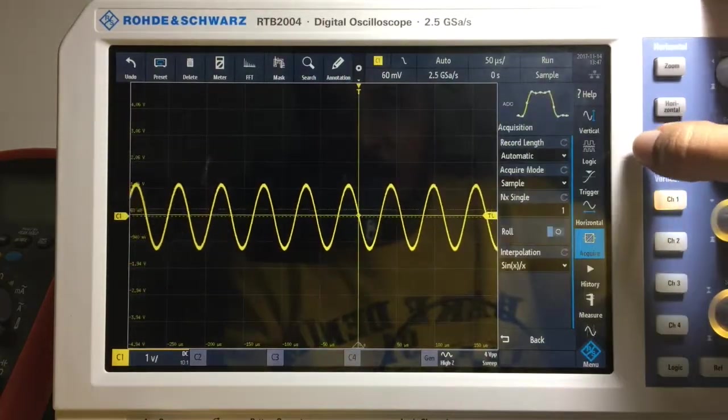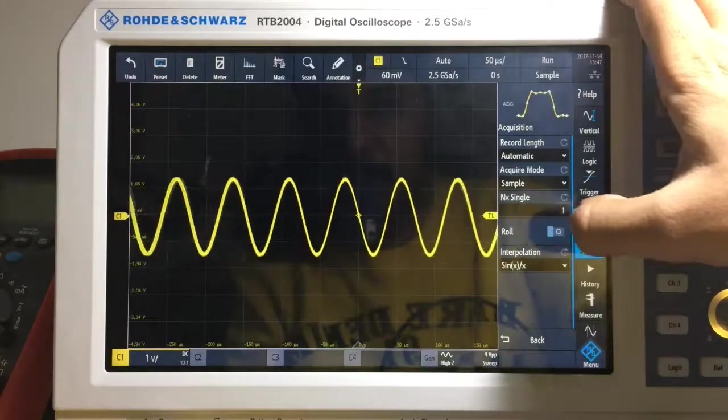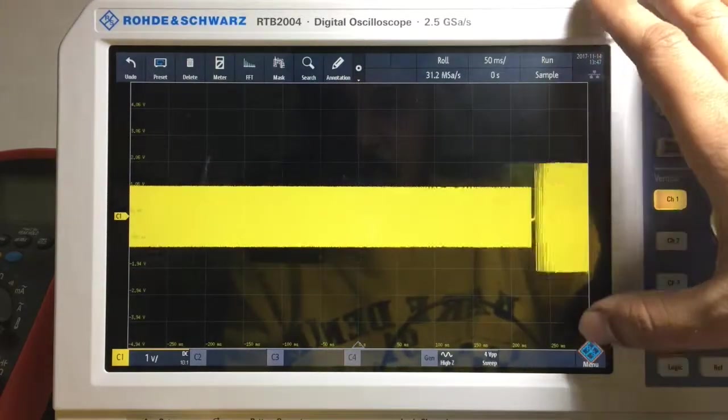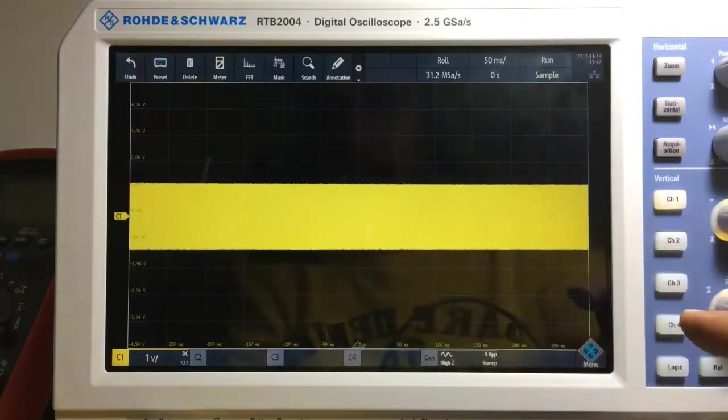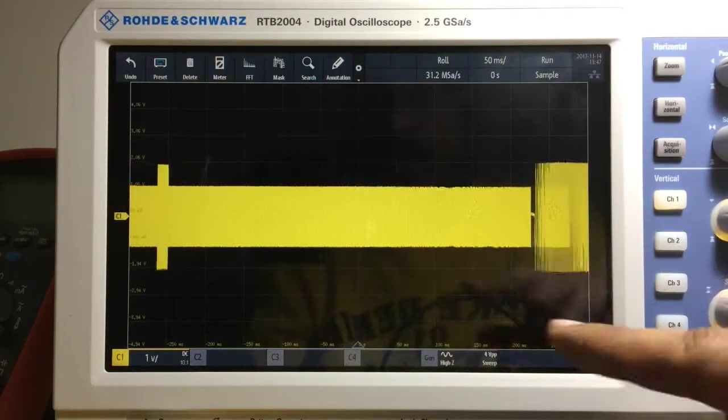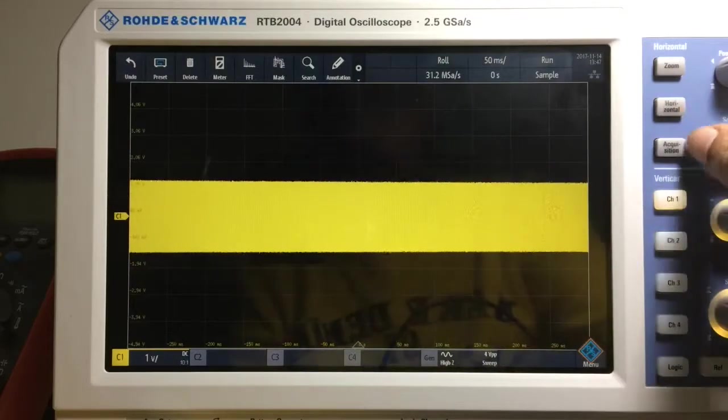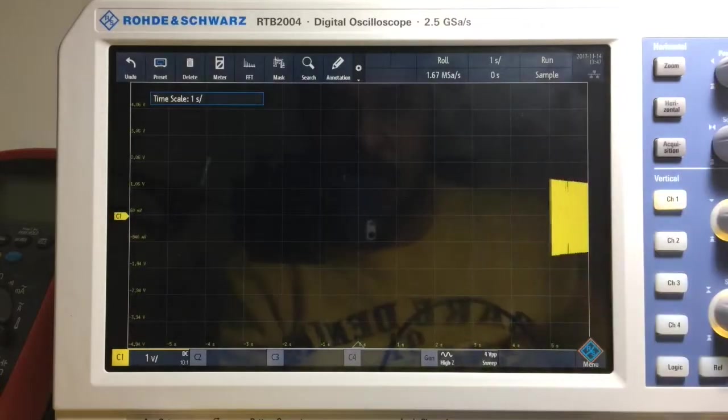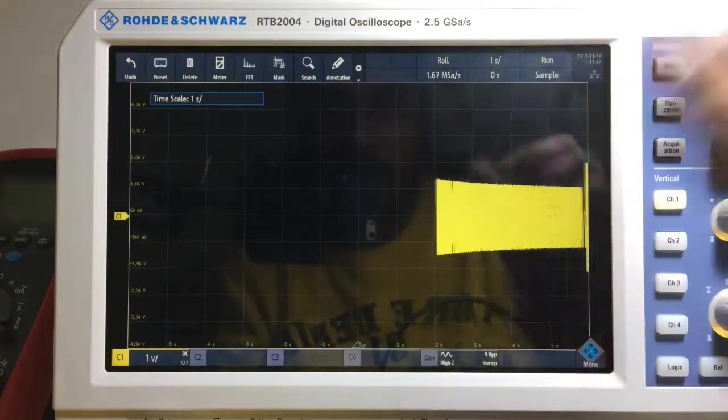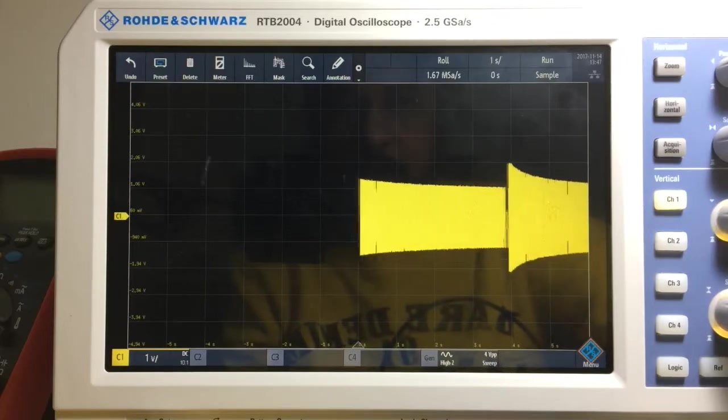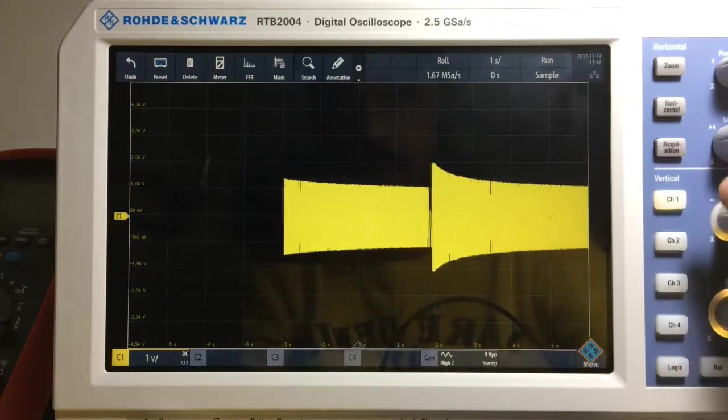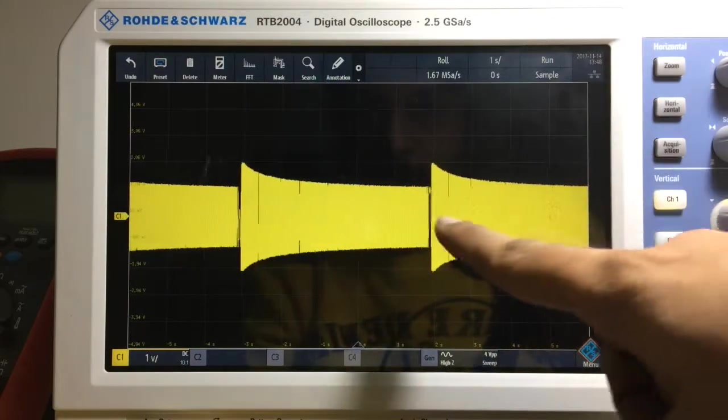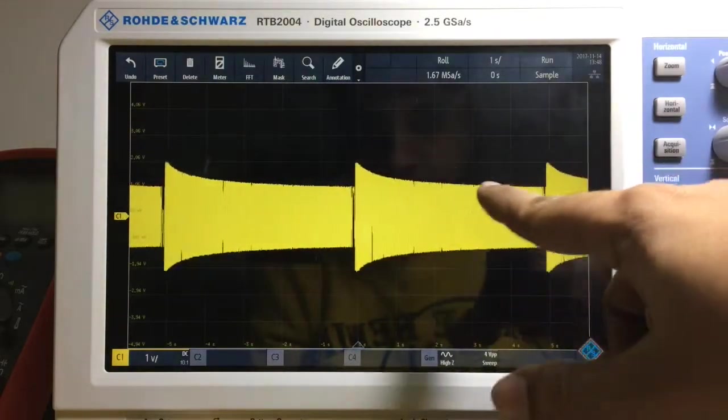I'm going to go into the acquisition menu. There I have the capability to plot a roll plot. Enabling that allows me to plot in a continuous time manner the amplitude of the signal. I'm just going to scale it down to about one second per division. Now you can see the kind of roll off that we were expecting.